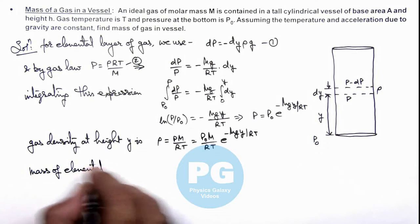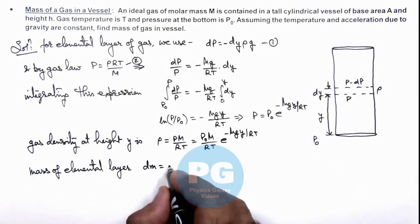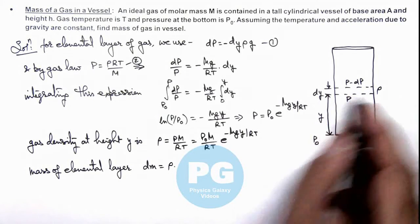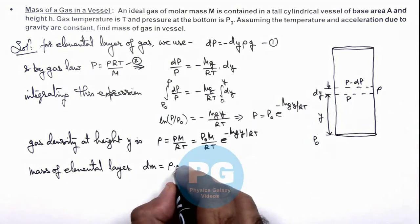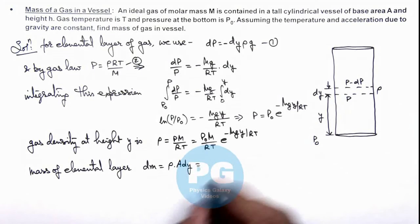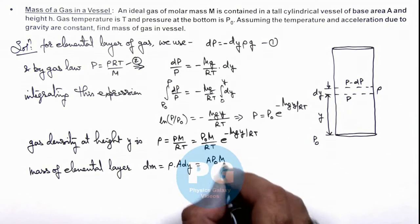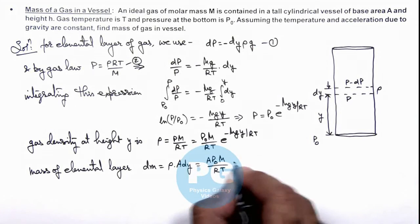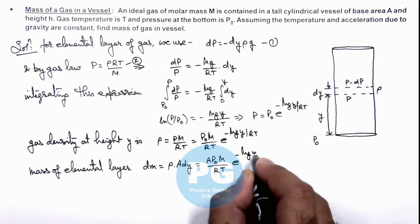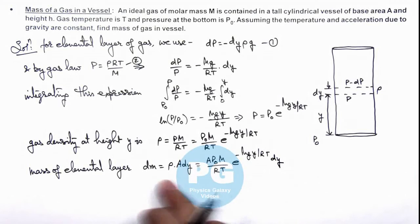Then we can calculate the mass of elemental layer which is dm, which can be written as gas density ρ multiplied by its volume, which can be written as A dy. If we substitute the value of ρ, it is A P₀ M/(RT) multiplied by e^(-Mgy/RT) dy.